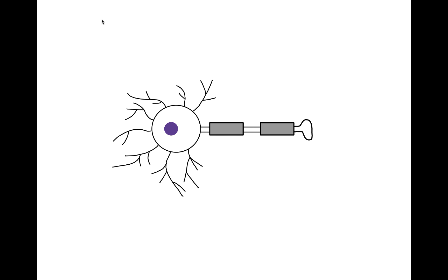Over the past couple of videos, we've been talking a lot about how neurotransmitters are released. In summary, what we see is that a neuron is stimulated, which will then cause action potentials to propagate down the axon, which will therefore cause the release of neurotransmitters into the environment. Over the past couple of videos, we have only been considering a two-neuron system — a presynaptic neuron that is releasing the neurotransmitters and a postsynaptic neuron that is responding to those neurotransmitters.